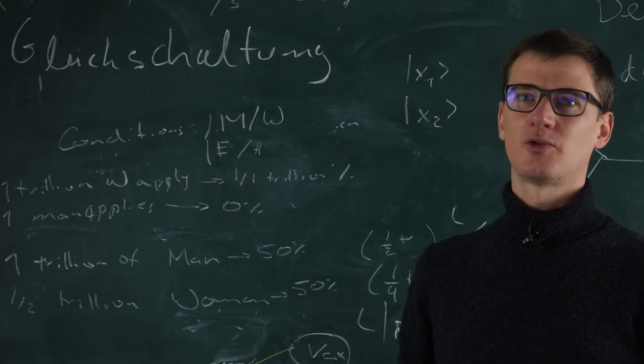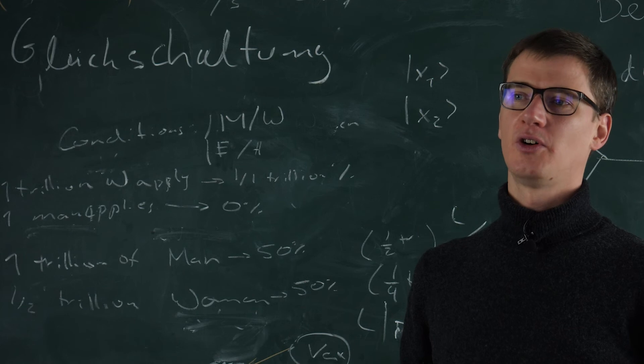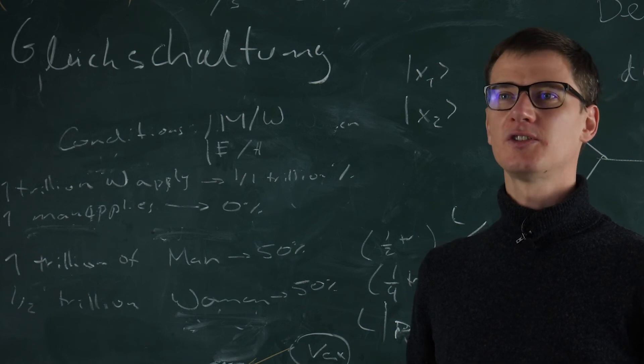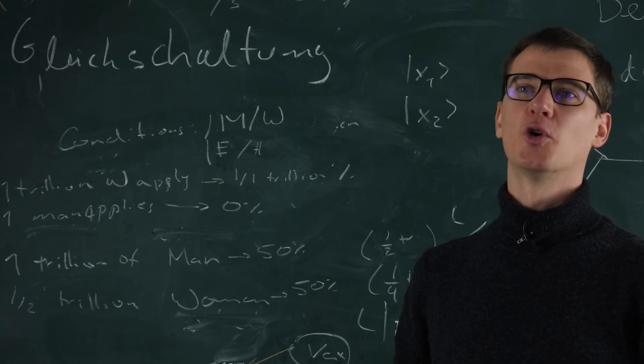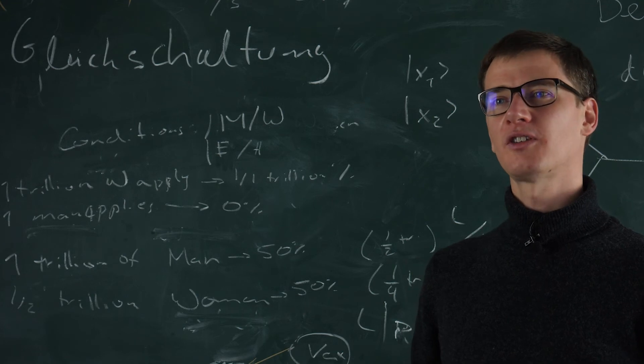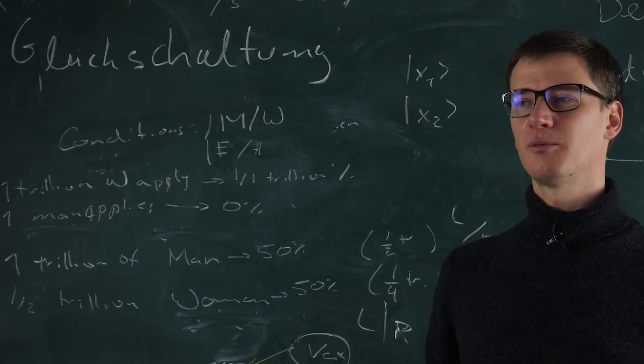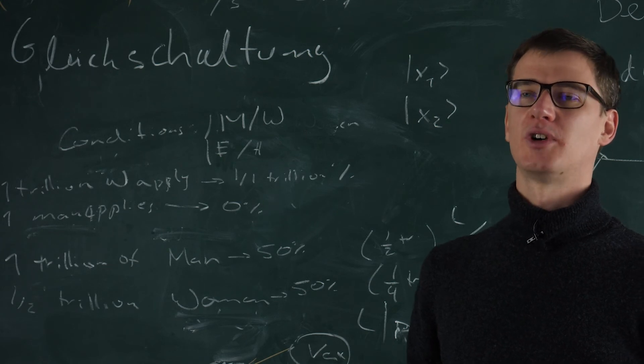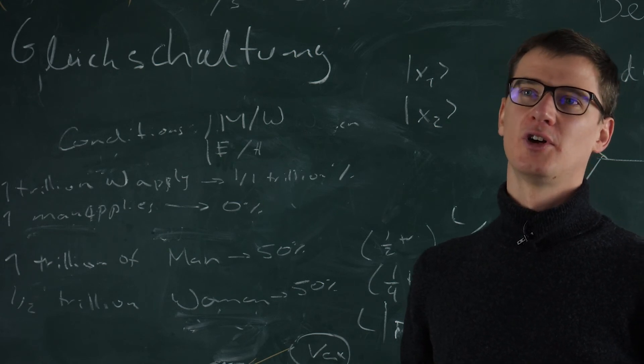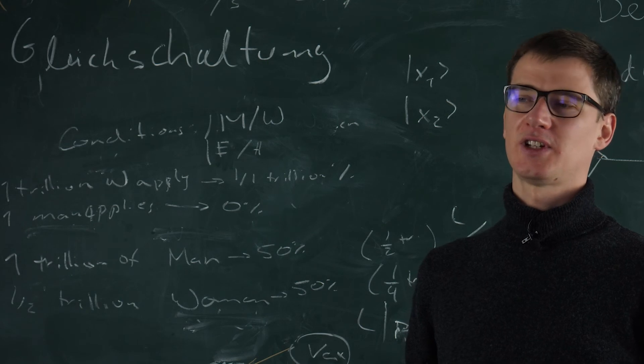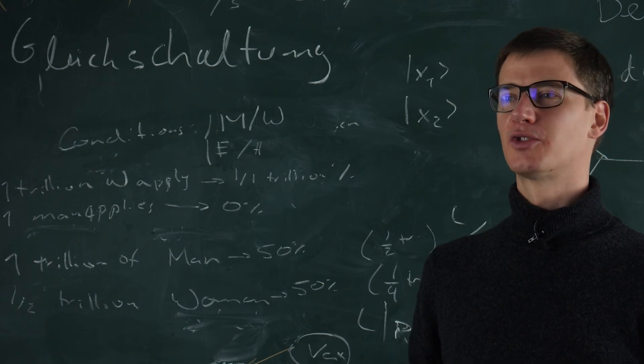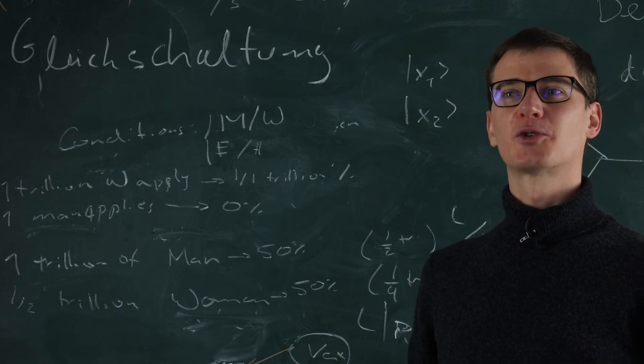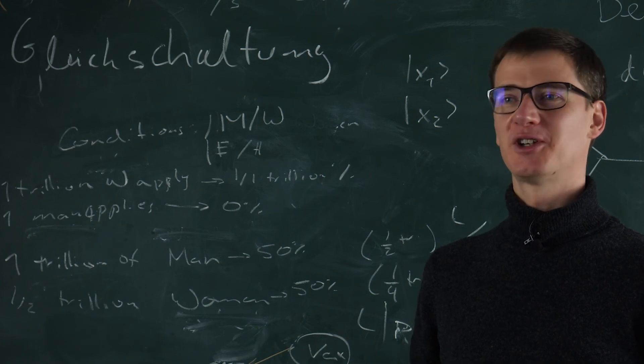This electron quantum optics for example builds on topological insulators, but sort of the old version of them, the quantum Hall effect. And then over time I moved progressively towards newer versions of topological insulators and try to catch up a little bit on condensed matter because that was not my initial curriculum.